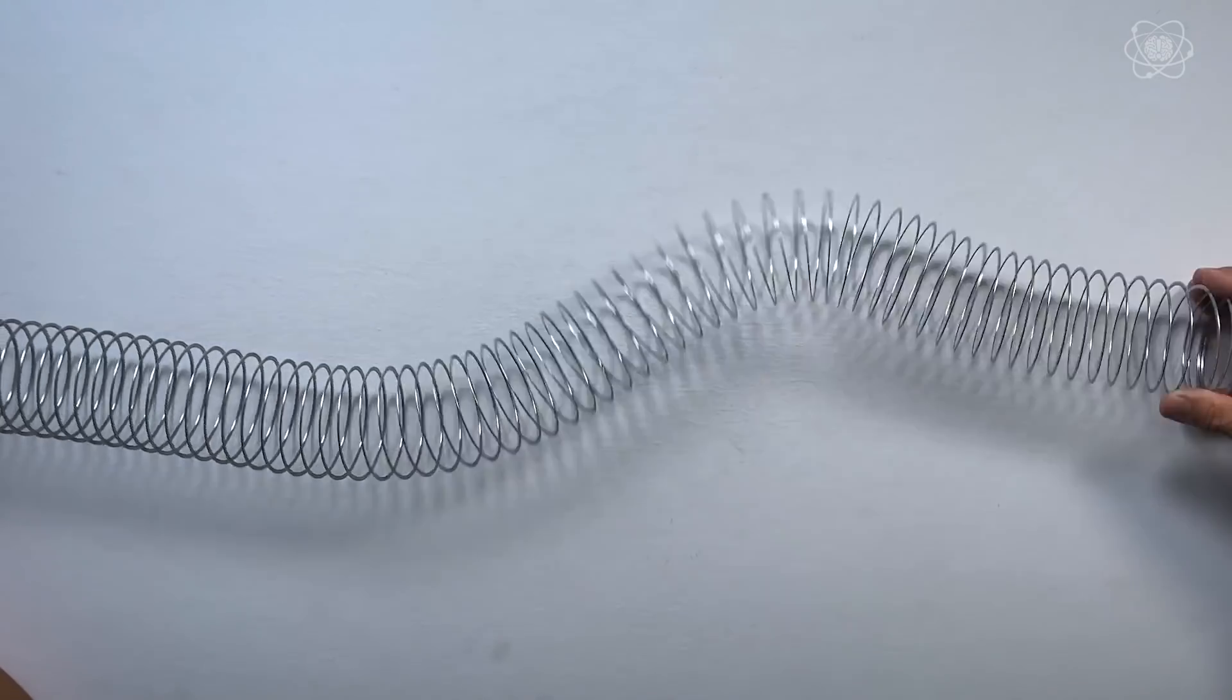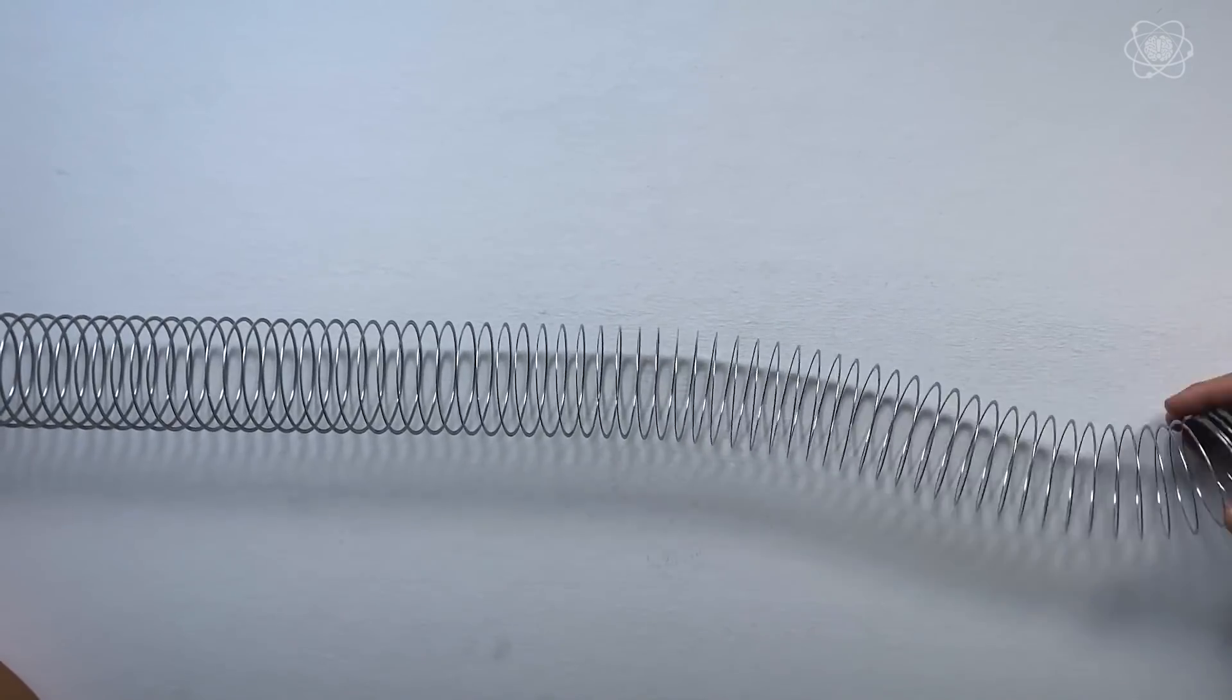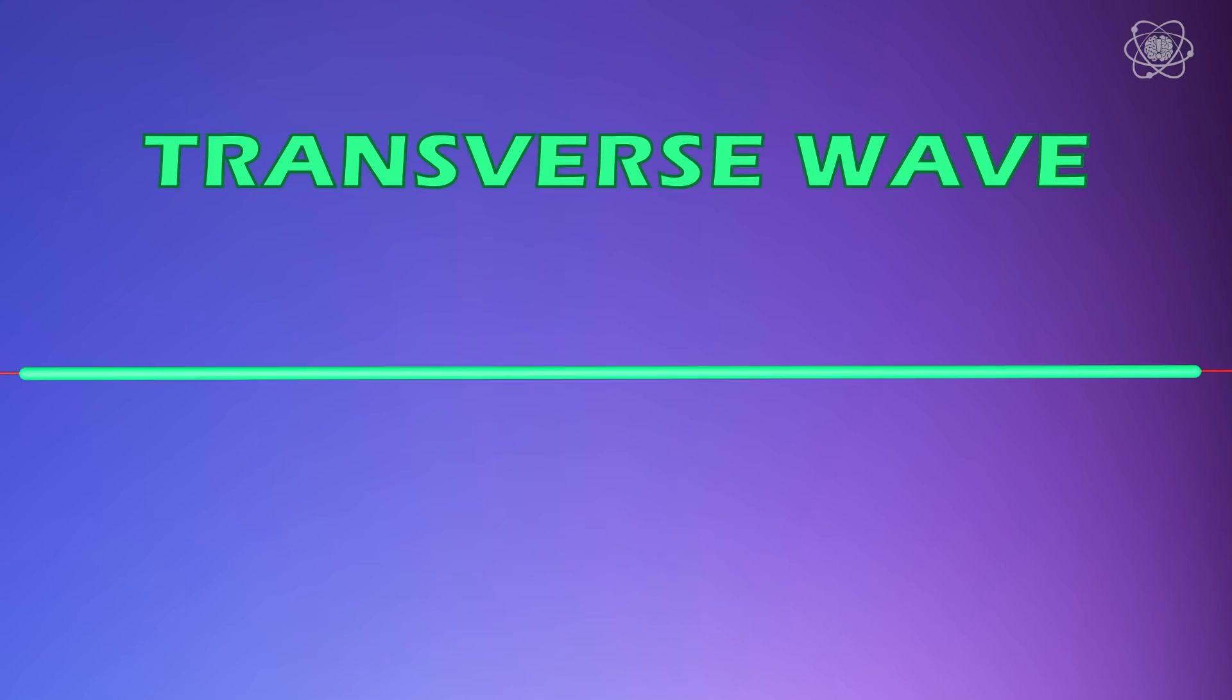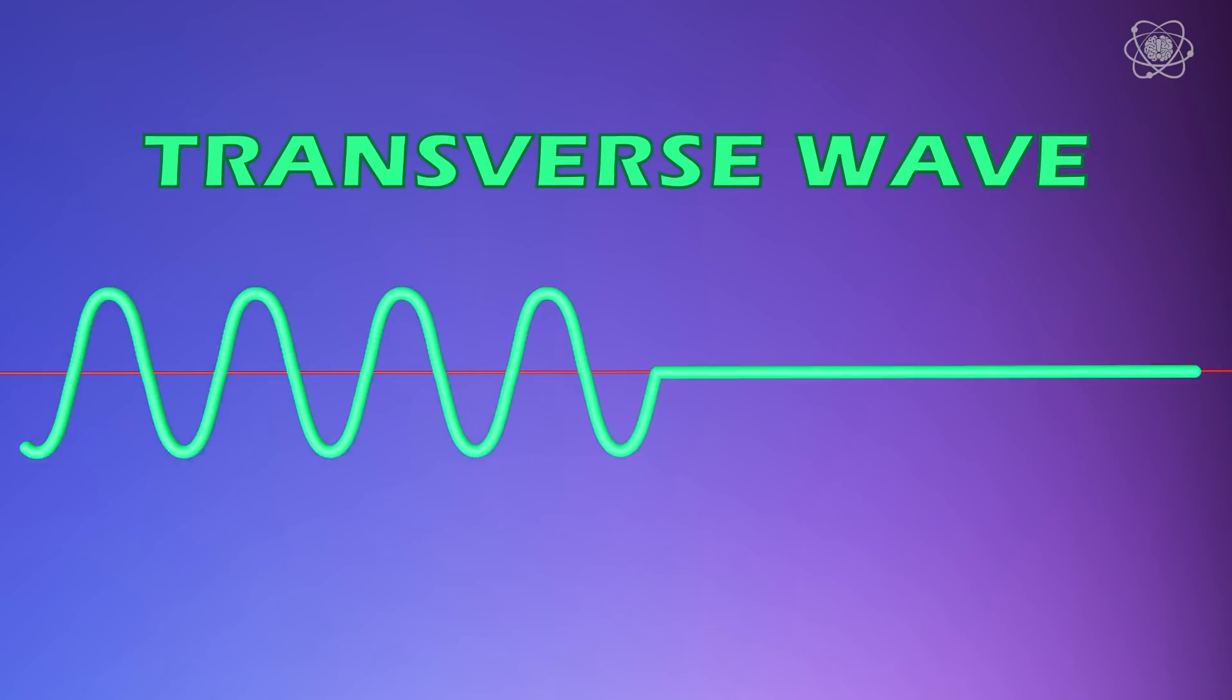Now, here's another type of motion. Take a close look at that coil, and you'll notice that the coil is actually moving upwards and downwards.